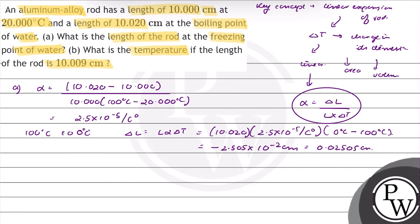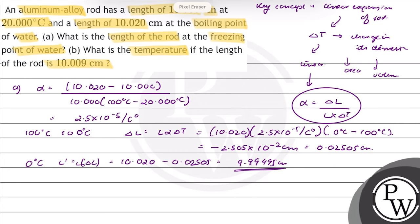The length of the rod at the freezing point, i.e., 0 degree Celsius, will be equal to L' = L + Delta L. This will be equal to 10.020 minus 0.02505, which gives 9.99495 centimeter. So the rod's length at 0 degree Celsius is equal to 9.99495 centimeter.